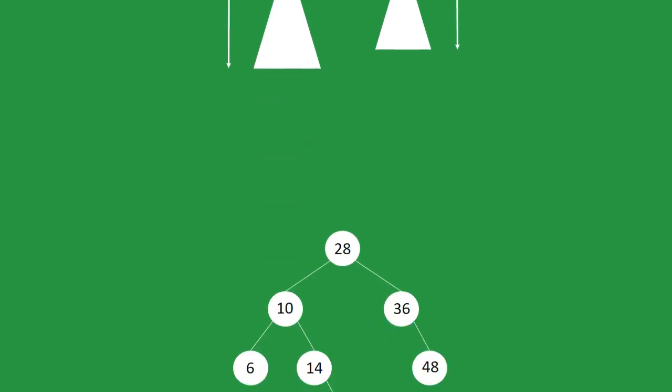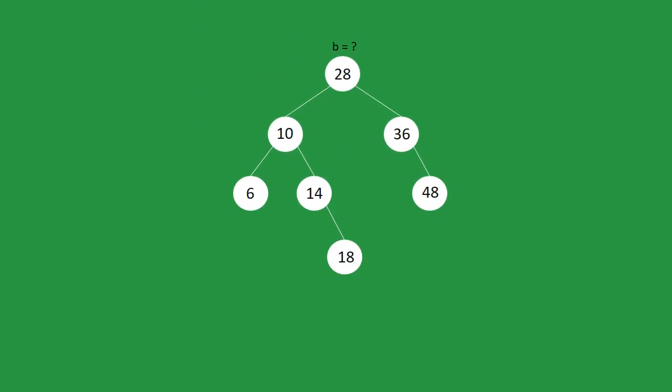For example, if we count the balance of the root, we count the number of nodes to the furthest leaf in the left subtree and then do the same for the right subtree. So balance of root is equal to minus 1.